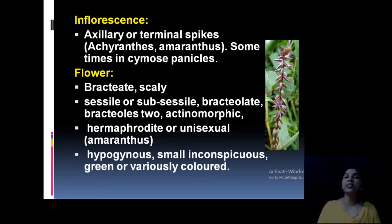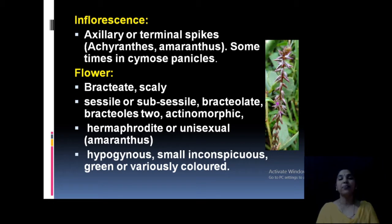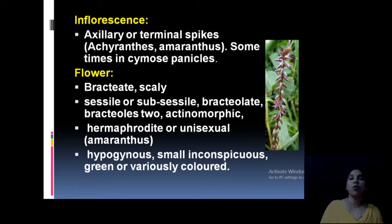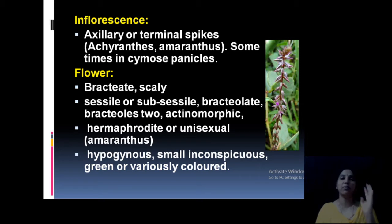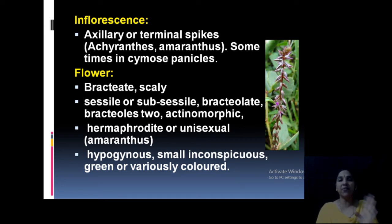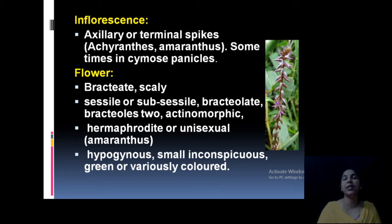Flowers are bracteate with a scaly, transparent skin-like appearance. They are sessile or subsessile, bracteolate with two bracteoles, and actinomorphic. Flowers may be bisexual or unisexual — Amaranthus is unisexual, with separate male and female flowers. The ovary is superior (hypogynous). Flowers are very small and inconspicuous — very difficult to study. They are usually green or variously colored.